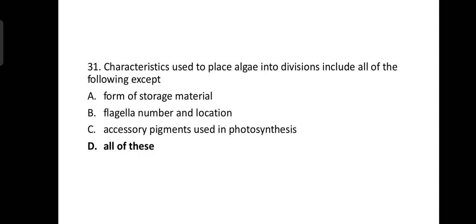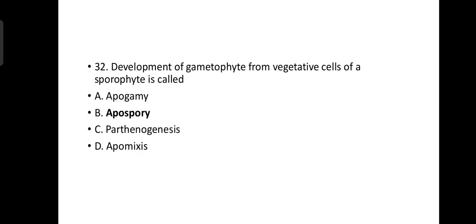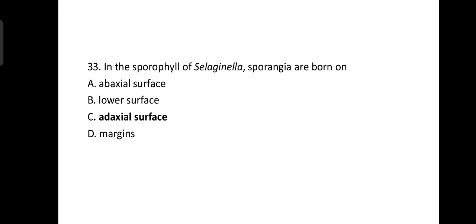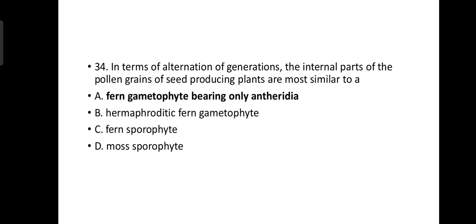Characteristics used to place algae into divisions include all of the following: they form the storage of material, they have flagella number and location, accessory pigments used in photosynthesis. Development of gametophyte from vegetative cells of a sporophyte is known as apospory. In the sporophyte of Selaginella, sporangia are borne on adaxial surface. Adaxial is upper, abaxial is lower surface. In terms of alternation of generation, the internal parts of the pollen grains of seed-producing plants are most similar to a fern gametophyte bearing only antheridia.